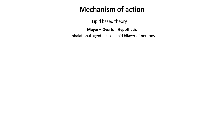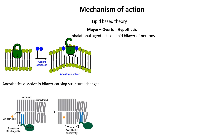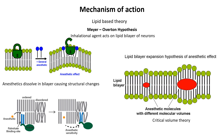One key aspect of this theory is the idea that anesthetics dissolve into the lipid bilayer, causing expansion or increased fluidity. These changes disrupt the normal functioning of membrane-embedded proteins, which impairs ion flow and neuronal signaling. The theory was further refined with the introduction of the critical volume theory, which proposes that a critical amount of expansion in the lipid bilayer is necessary to induce anesthesia.